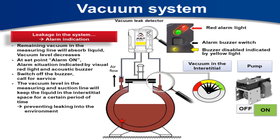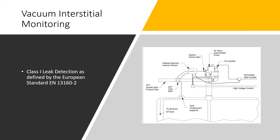You can pause the video to read the details on the diagrams — I pulled these from another website and will put the link there in case you want more information. This is called Class 1 leak detection, defined by European standard EN 13160-2. The system is put under vacuum, and this also connects to the piping so both the piping and the tanks are under vacuum at the same time, meaning the whole system is being monitored by that vacuum.